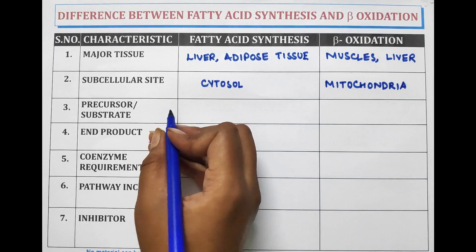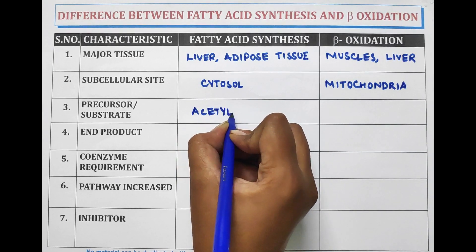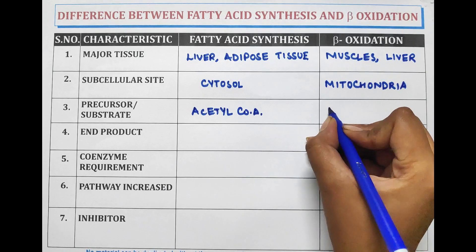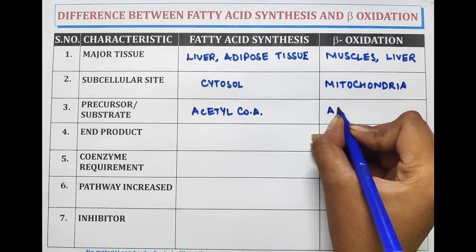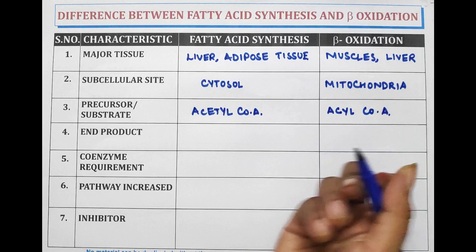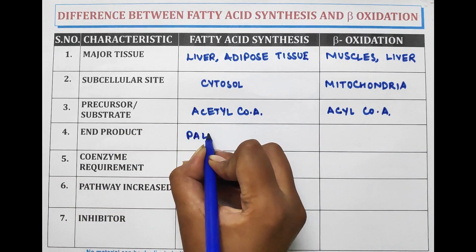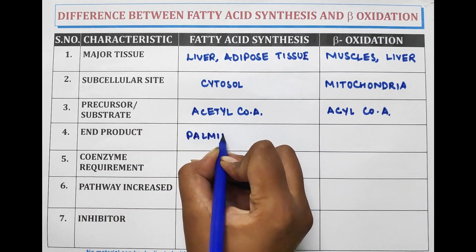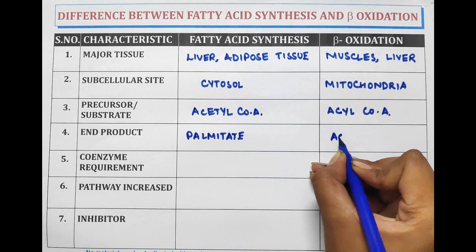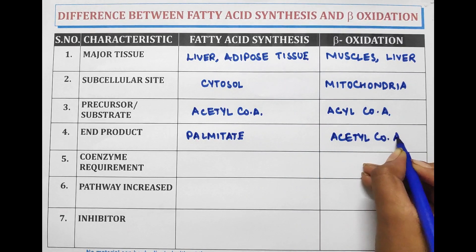The precursor or substrate for fatty acid synthesis is acetyl coenzyme A, and for beta oxidation it is acyl coenzyme A. The end product of fatty acid synthesis is palmitate, whereas for beta oxidation it is acetyl coenzyme A.